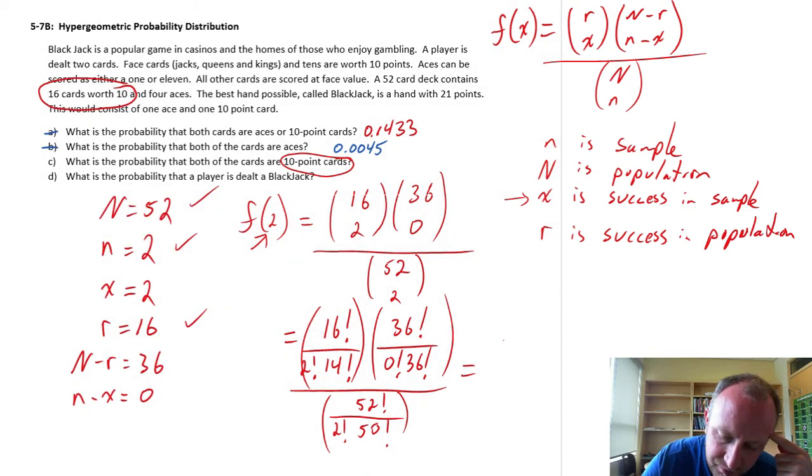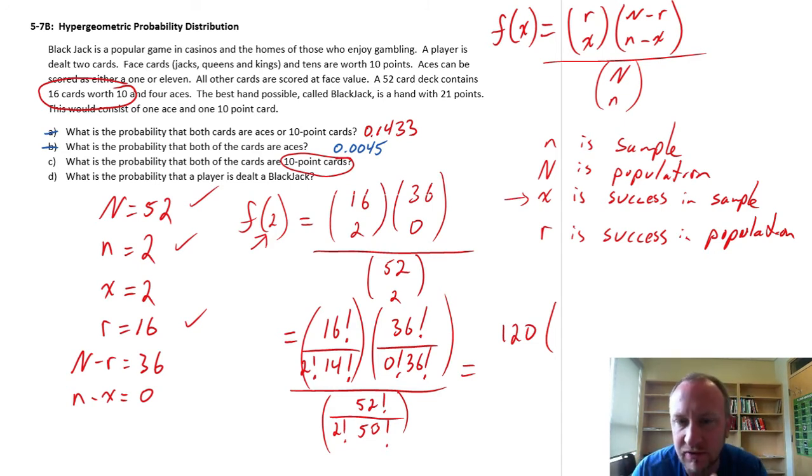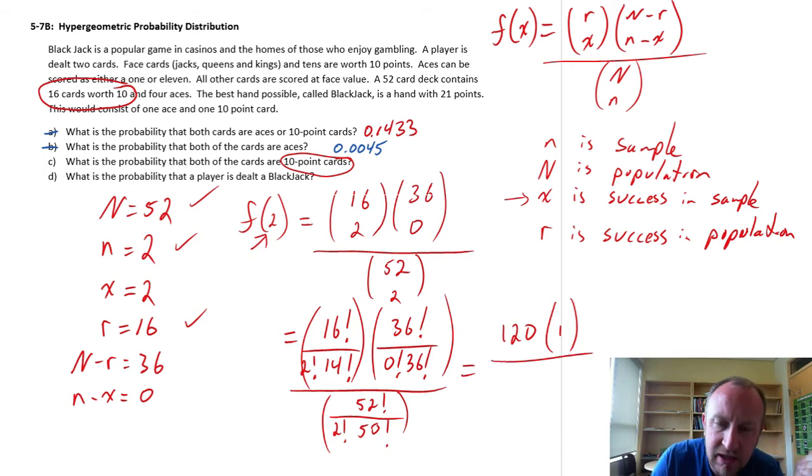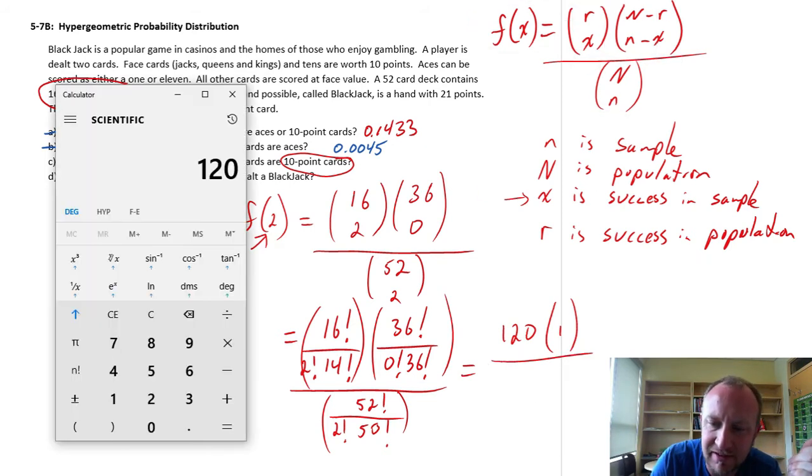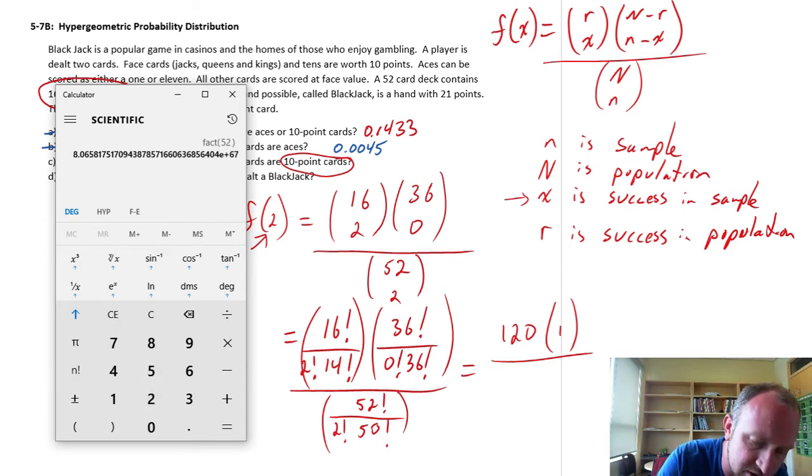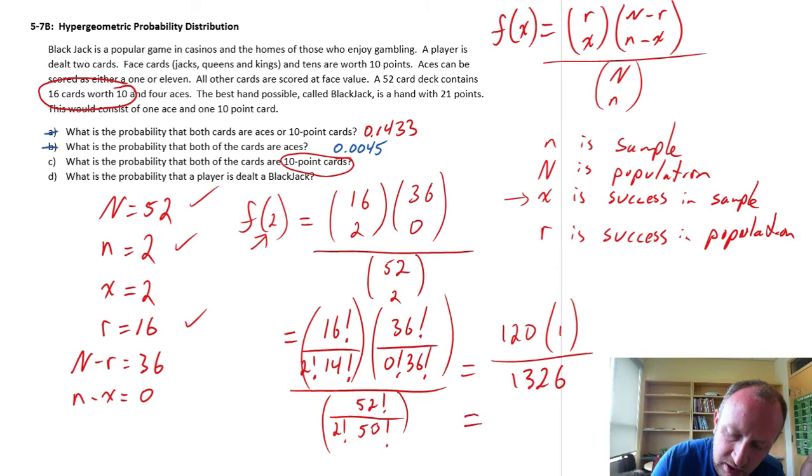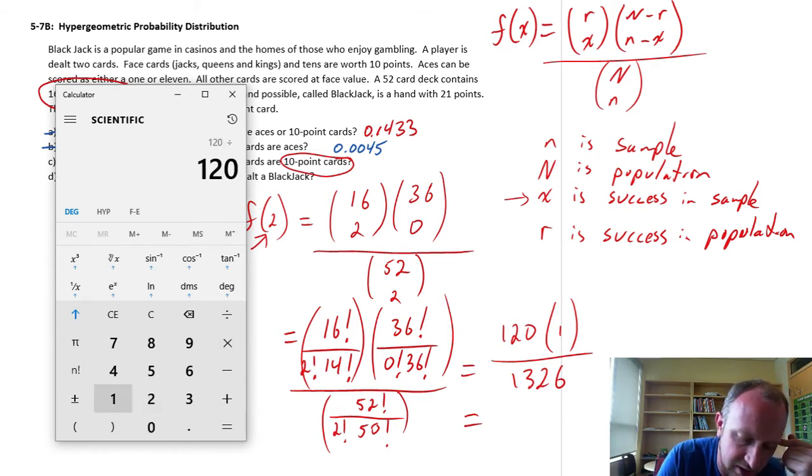So 120 times the second term in the numerator, this is an easy one, it's just 36 over 36 factorial. 36 over 36 factorial, and 0 factorial is always 1, so this second term is just equal to 1, right? Because these numerator and the denominator are exactly the same, so the ratio is 1. In the denominator, in the denominator here, this is the same as it was for parts A and B actually, I shouldn't have deleted them, that's 52 factorial divided by 2 factorial times 50, so 1326, and so our final probability is 120 divided by 1326.